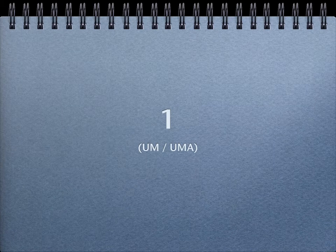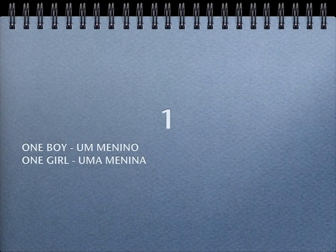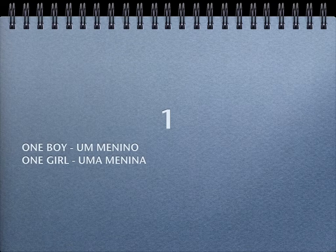Number 1 in Portuguese has two possible translations. We can say 'um' or 'uma.' 'Um' is the masculine form of number 1, and 'uma' is the feminine form. Let's see an example: if the following word is a masculine word, like 'one boy,' we use the masculine form — 'um menino.' But if the following word is a feminine word, like 'one girl,' we use the feminine form — 'uma menina.'